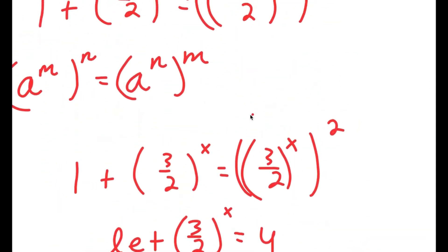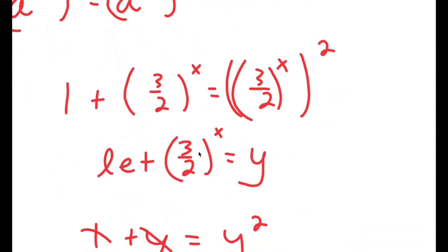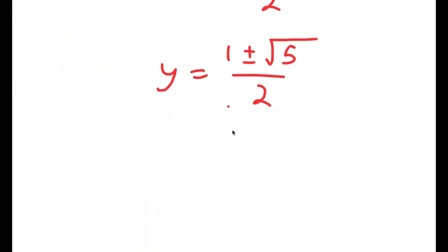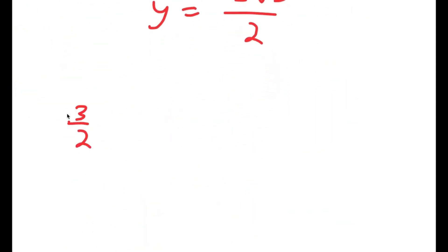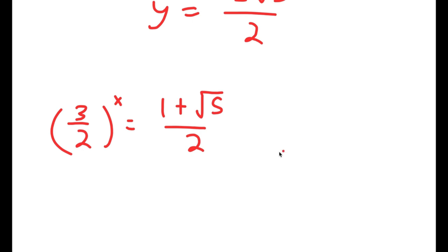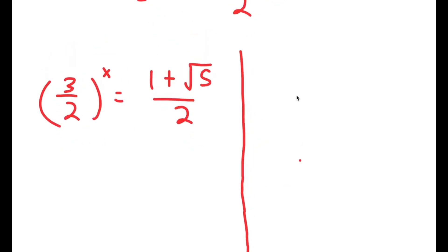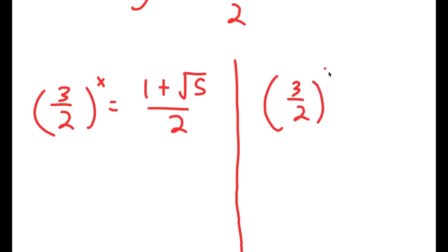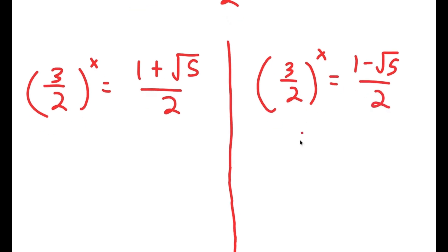We're not done yet because we're solving for x, not y. Remember we let 3 over 2 to the power of x equal y, so this gives two equations: 3 over 2 to the power of x equals 1 plus the square root of 5 over 2, and 3 over 2 to the power of x equals 1 minus the square root of 5 over 2. We can already eliminate the second equation, because 1 minus the square root of 5 is a negative number, and you can't take the power of a positive number and make it equal a negative number.